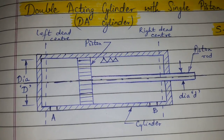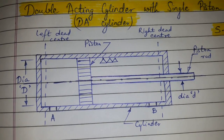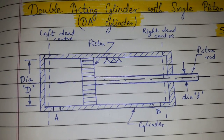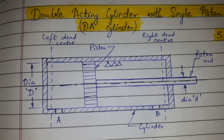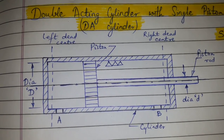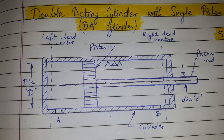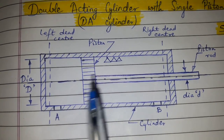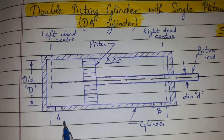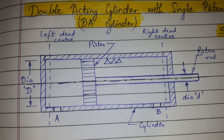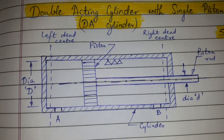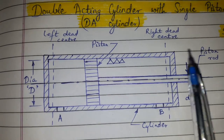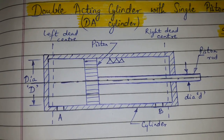When the piston reaches the left dead center, flow through port B stops and flow through port A starts again, and the cycle repeats, resulting in the reciprocating motion of the piston. In a DA cylinder, a spring is not required as in the SA cylinder, because the reciprocating motion is driven by pressurized oil coming through the two ports.